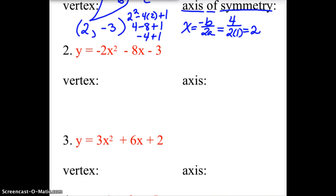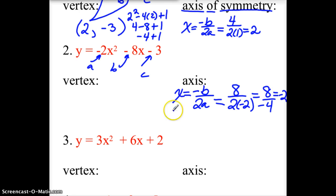So on number 2, again, to find that axis of symmetry, it's the line x equals the opposite of b over twice a, which would be the opposite of negative 8, which is 8, over twice a - this is a, b, c - we get 8 divided by negative 4, or negative 2. So the line x equals negative 2 is my axis of symmetry.